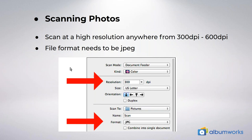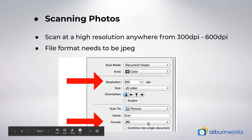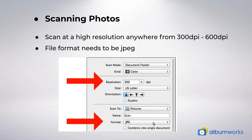As you can see in this slide, you need to set your resolution to 300 DPI on your scanner — either 300 or 600. You also need to save the files as JPEG images. Make sure you choose JPEG, as our editor does not accept PDFs or bitmap files.